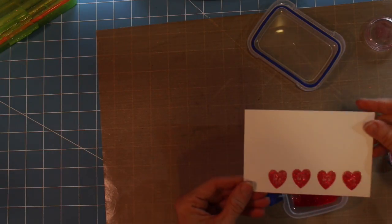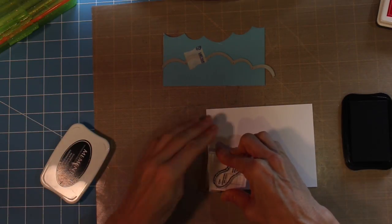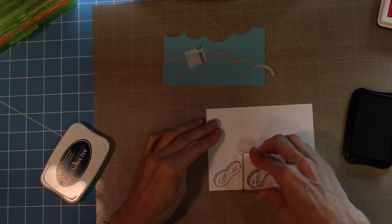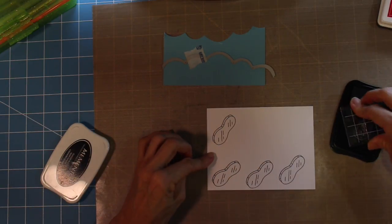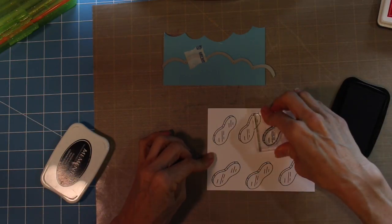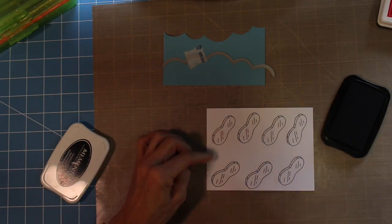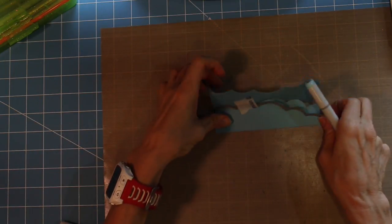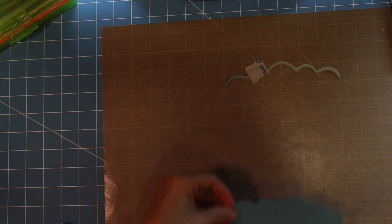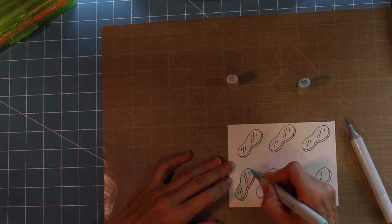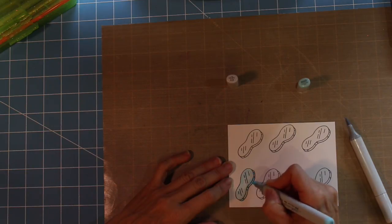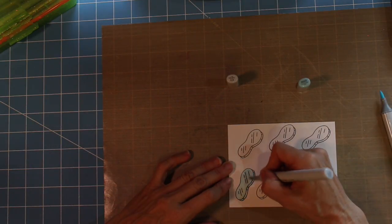I'm going to heat set that, and I'll come back with glossy accents and go over the top of all those hearts to give it some pop. Next, I'm taking the ice and stamping that out. I'm going to do the same thing—color it in and then come back and put some glossy accents on top of the ice to give it texture and dimension.